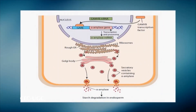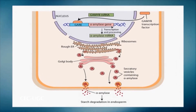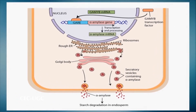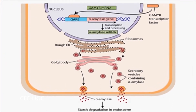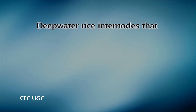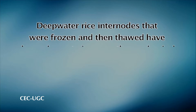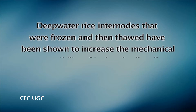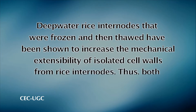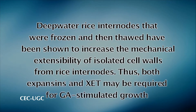One possibility is that Z facilitates the penetration of expansins into the cell wall. According to this view, GA and auxin may work together to promote cell wall loosening — auxin inducing proton extrusion while GA stimulates Z activity, which allows expansin proteins to penetrate the wall where they become activated by acidic pH. Consistent with this idea, deep-water rice internodes that were frozen and then thawed showed an increase in the mechanical extensibility of isolated cell walls. Thus, both expansins and Z may be required for GA-stimulated growth.